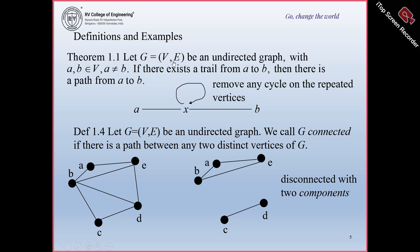Suppose G is a graph with V vertices and E edges — an undirected graph with A, B belonging to V and A not equal to B. If there exists a trail from A to B, then there is a path from A to B. A trail may have repetition of edges but not vertices, so if you have a trail from A to B, you can remove any cycles on repeated vertices to get a path.